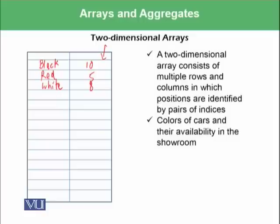So a two-dimensional array contains multiple columns. Similarly, we could have a three-dimensional array or four-dimensional array, which could have more columns compared to two-dimensional arrays.